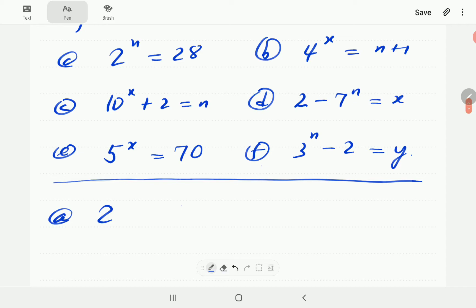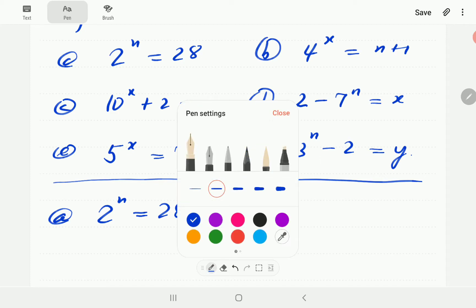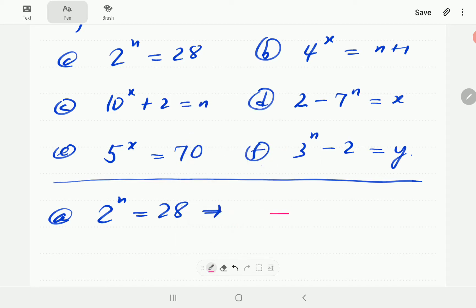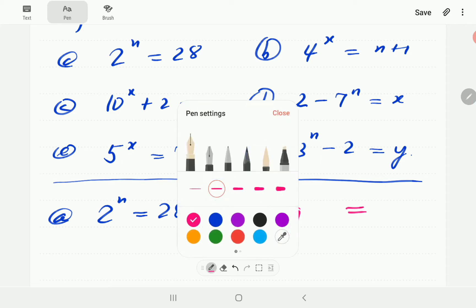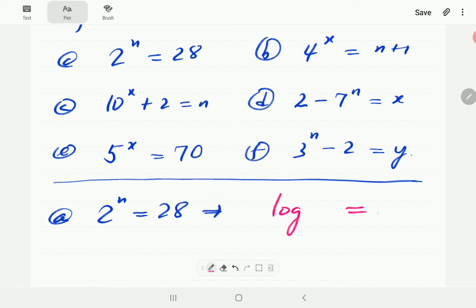In a, we have 2 to the power n is equal to 28. So what's this going to be in logarithmic form? For starters, you could even do this by elimination. We know that we have got 3 positions to be filled.